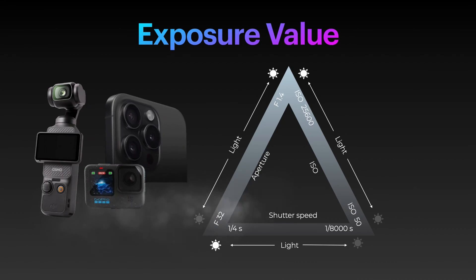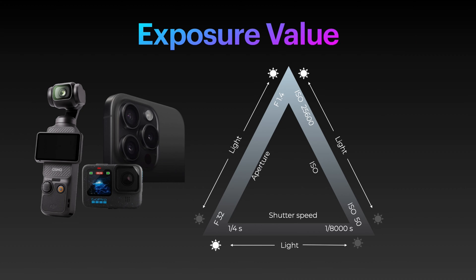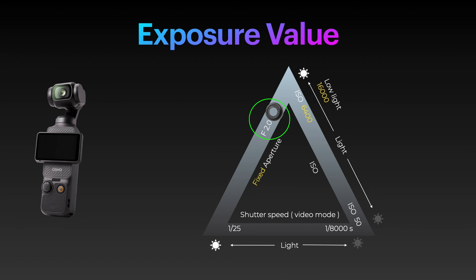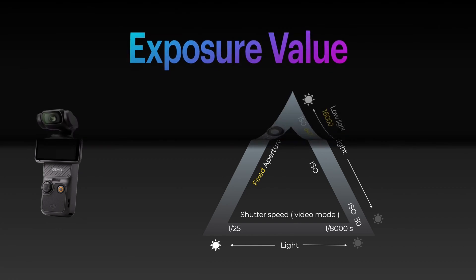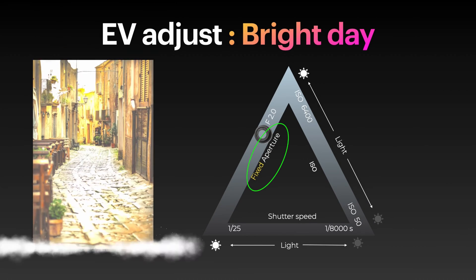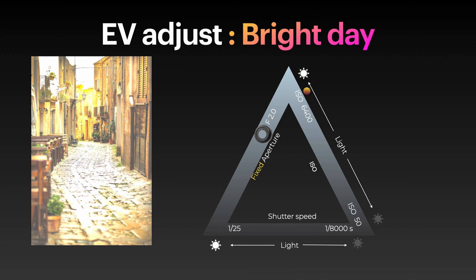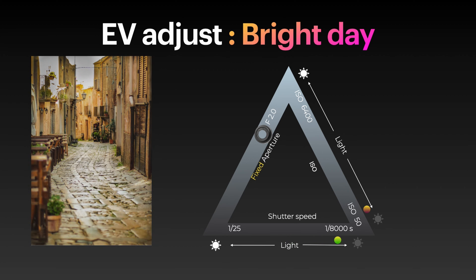The first thing we need to realize is that the Pocket — just like iPhone and action cameras — has a fixed aperture so it can't change. The Pocket 3 has a fixed aperture of f2.0, so that means we only have two other dials to adjust exposure: shutter speed and ISO. In bright environments shooting outside, the camera will lower the ISO value as it's bright and doesn't need to amplify the light hitting the sensor, and will adjust the shutter to a faster speed to limit light coming in and make the image darker.